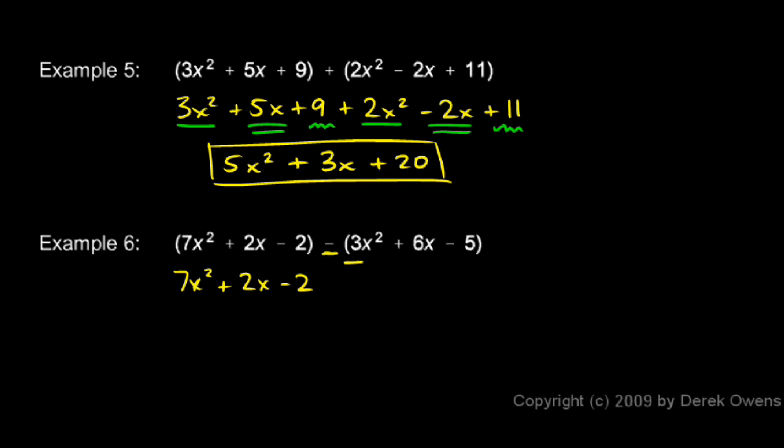So we're subtracting the 3x², so I'll write -3x². We're subtracting the 6x, so I write -6x, and we're subtracting the -5. So I'll write +5, because minus the -5 gives me a positive 5.